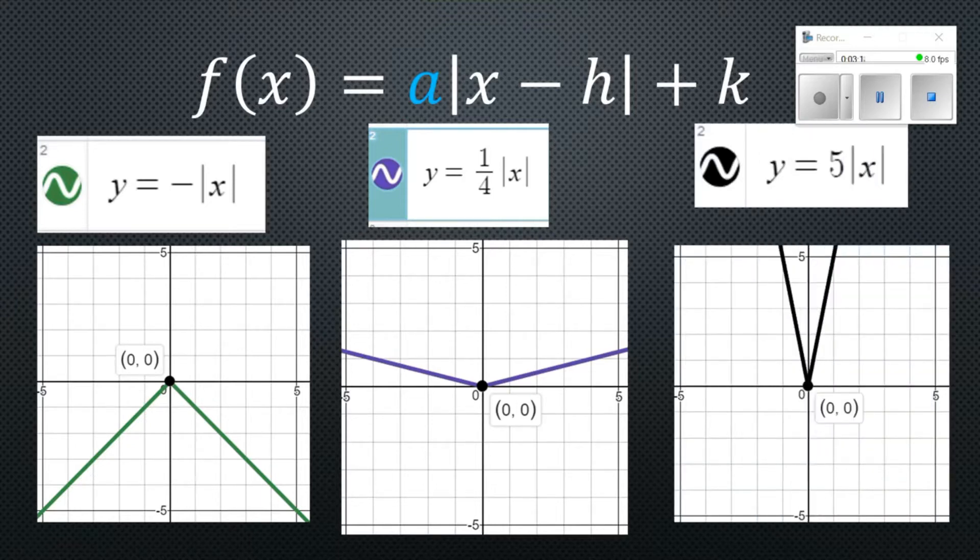The last example here in terms of the a values is putting a number larger than one out front, such as 5. And I call these skinny graphs. Now these are actually called a vertical stretch and the purple one would be called a vertical shrinking.